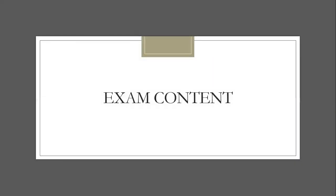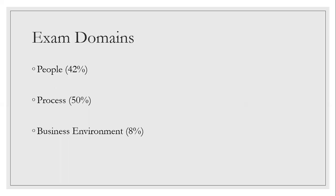Now let's look at what is in the PMP exam. The exam is divided into three domains: People, Process, and Business Environment. People accounts for 42% of the questions, Process is the highest at 50%, and Business Environment is the lowest at 8%. These add up to 100%.